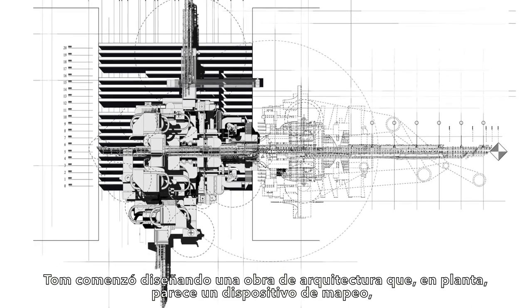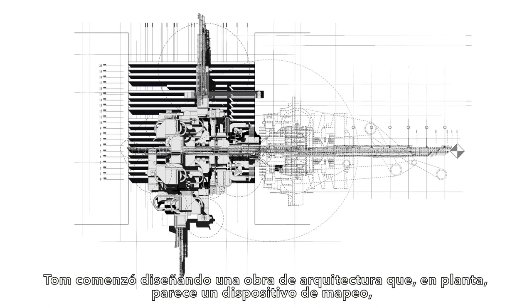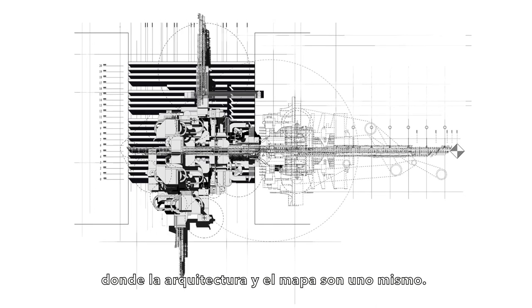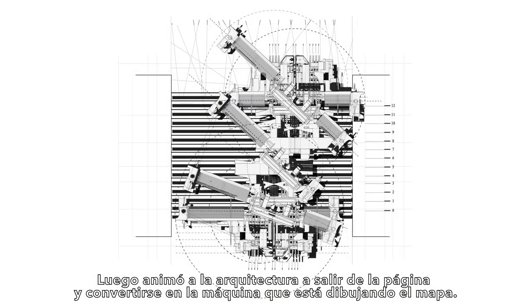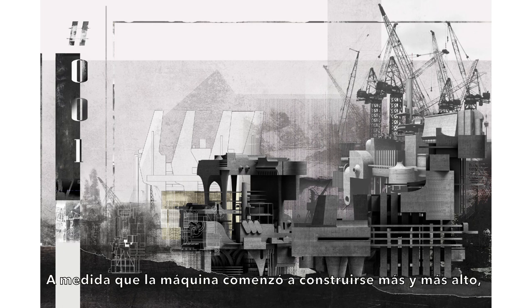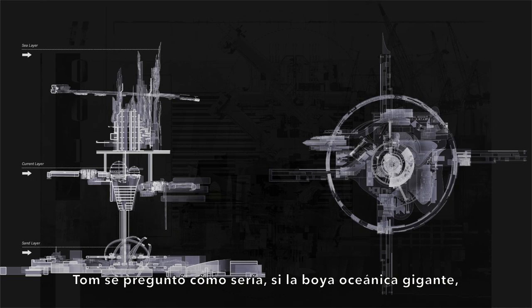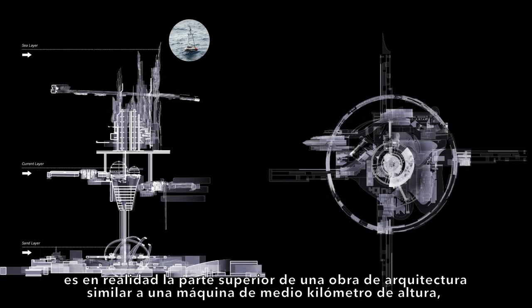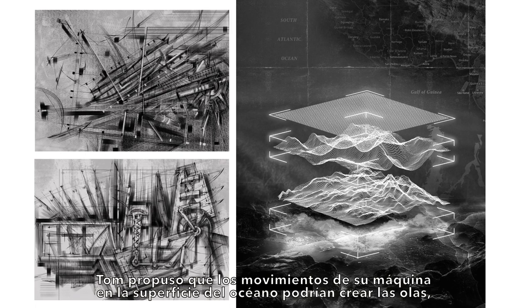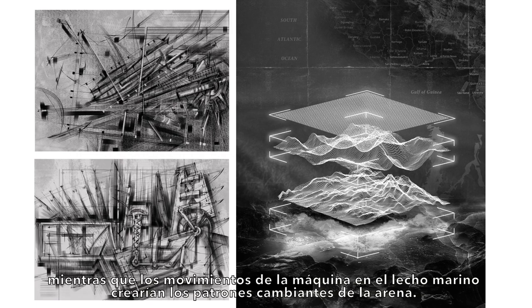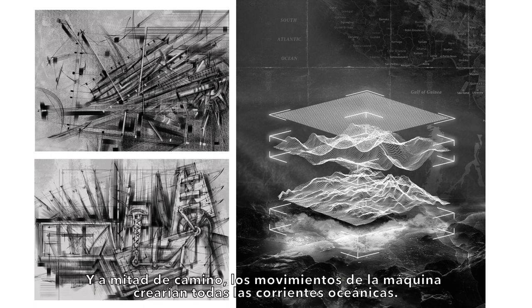Tom began by designing a work of architecture that in plan appears like a mapping device where the architecture and the map are one and the same. He then encouraged the architecture to rise up out of the page and become the machine that is drawing the map. As the machine began to build itself higher and higher, Tom wondered what it might be like if the giant ocean buoy is actually the very top of a half-kilometer tall machine-like work of architecture that extends all the way down to the seabed. Tom proposed that the movements of his machine at the surface of the ocean might create the waves, while the movements of the machine on the seabed would create the shifting patterns of sand, and halfway in between, the movements of the machine would create all the ocean currents.